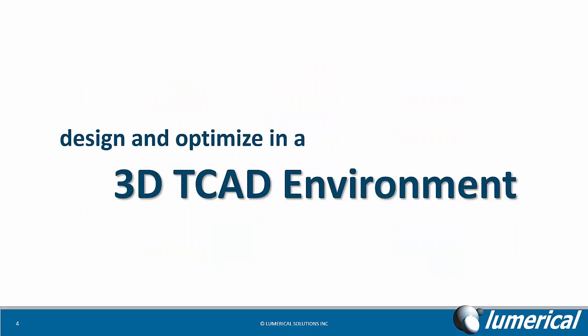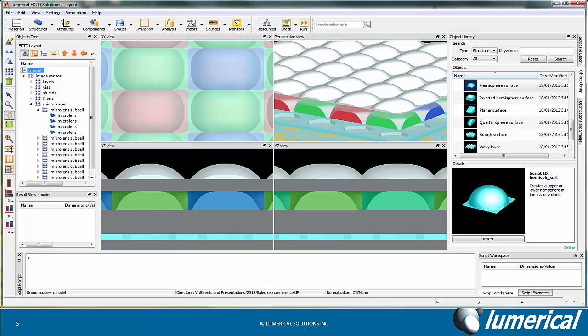FDTD Solutions allows you to design and optimize in a 3D CAD environment. You can start by building your component, which can have very complex 3D geometries, like the CMOS image sensor shown here.